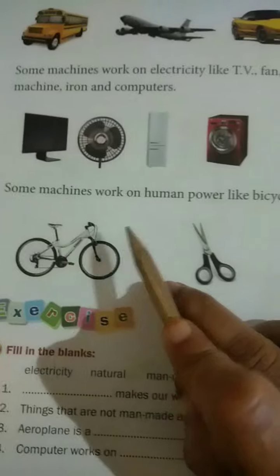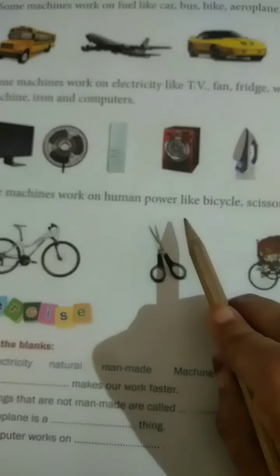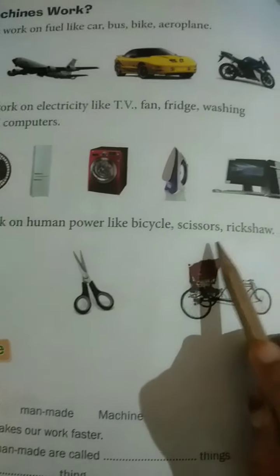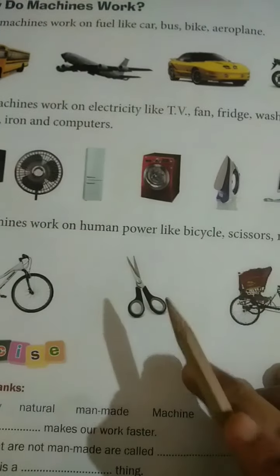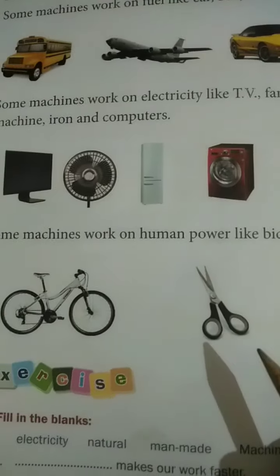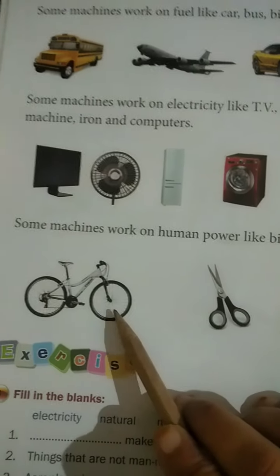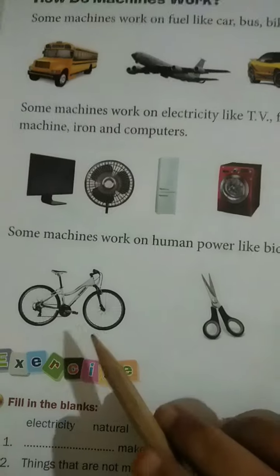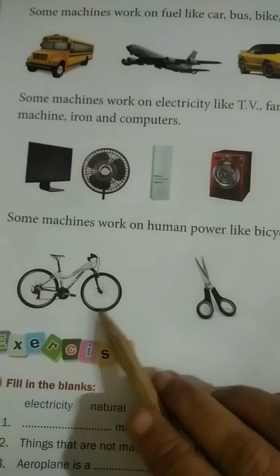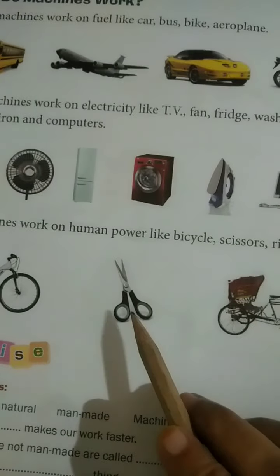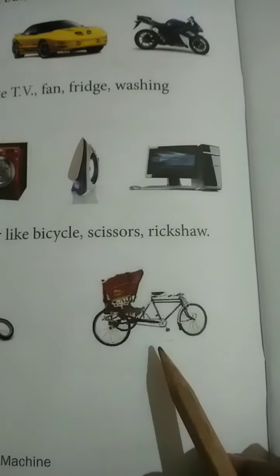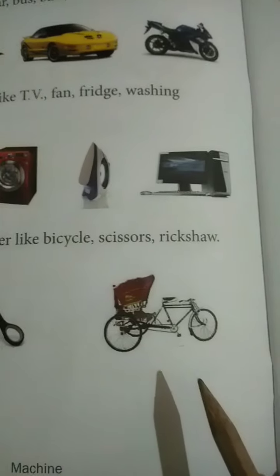Some machines work on human power — like bicycle, scissors, and rickshaw. Cycle pe pedale maarte ho to cycle chalti hai. Scissors use karne ke liye haath ki zaroorat padti hai. Rickshaw ko use karne ke liye bhi pedale maarne padte hain — yeh human power se chalti hain.